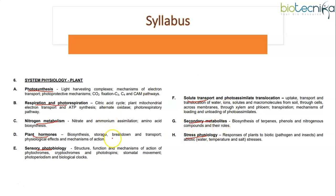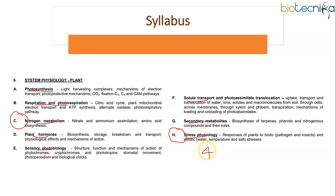Now, what are the important subunits from Unit 6? I would like to say what are the least important subunits from Unit 6. Nitrogen metabolism and stress physiology are considered to be the least important. It's not that they don't ask questions — they do ask, but it is not mandatory. They do ask questions in the form of four marks, but sometimes they ask, sometimes they won't.